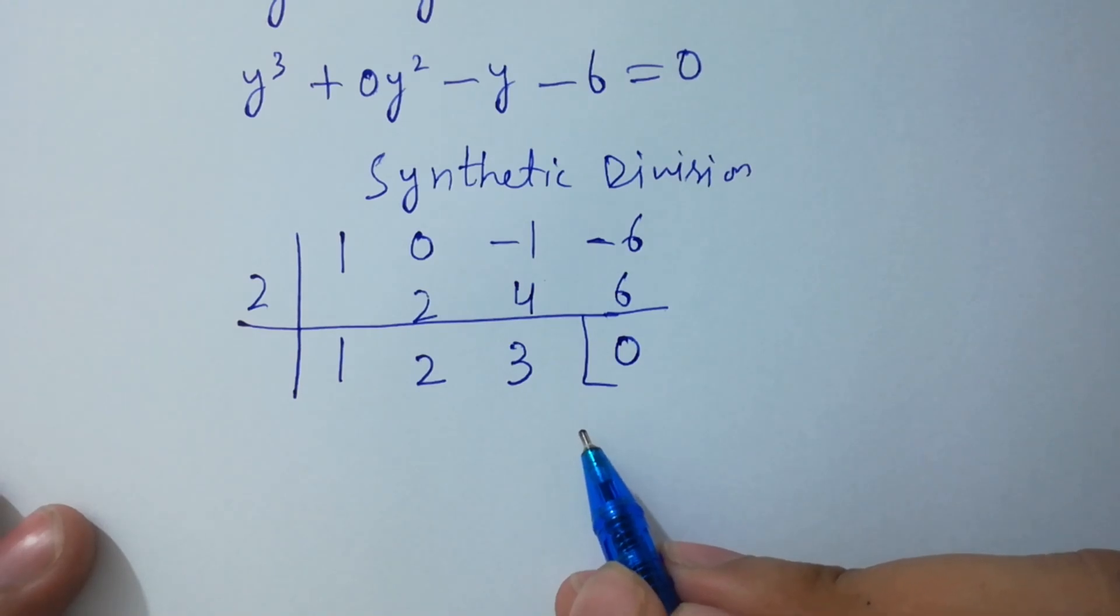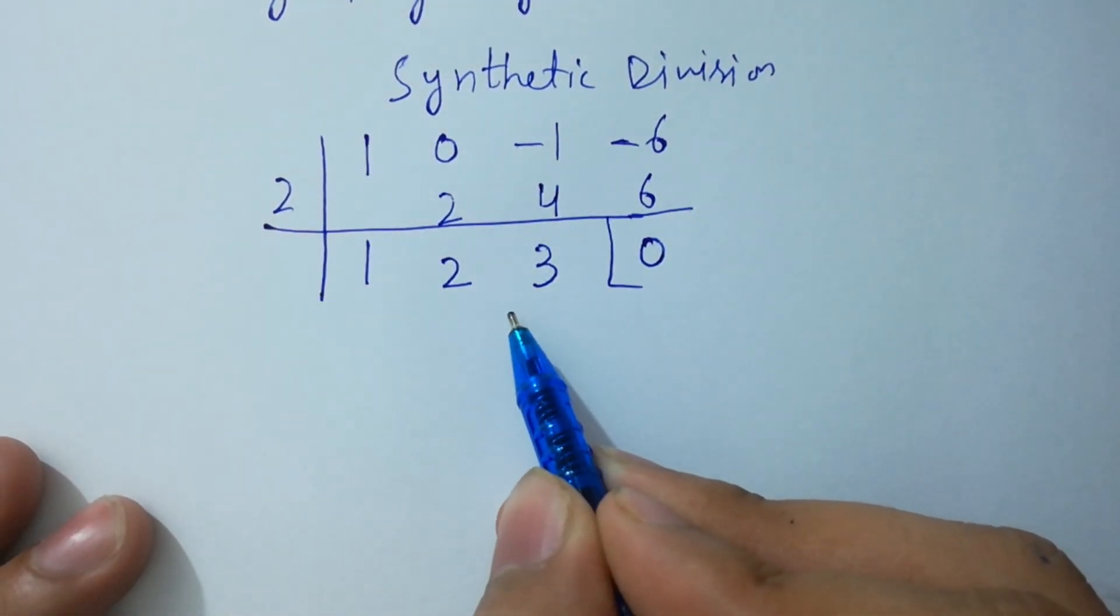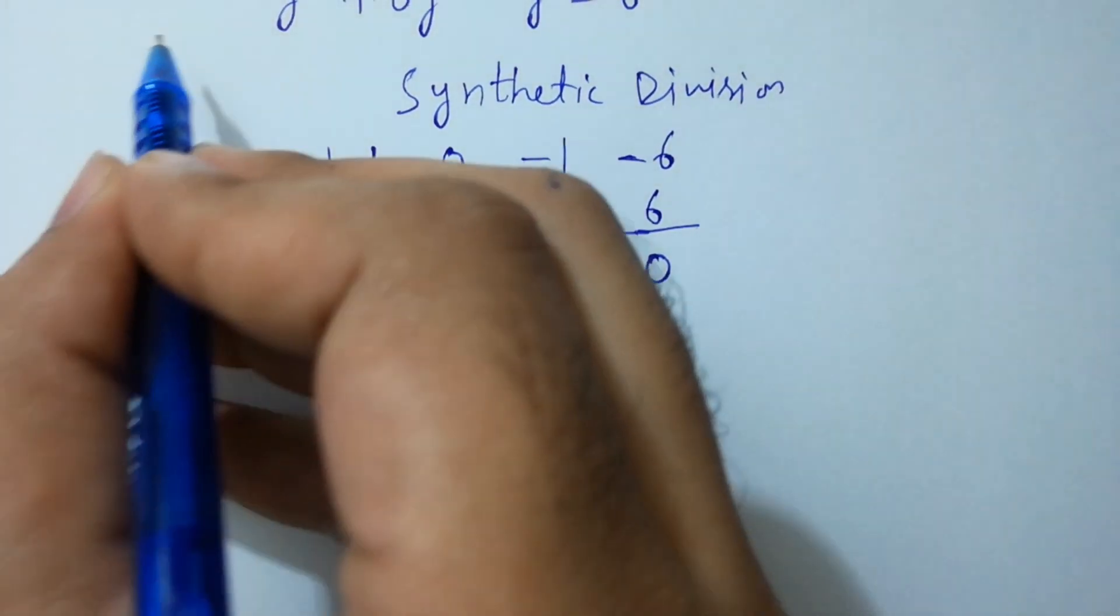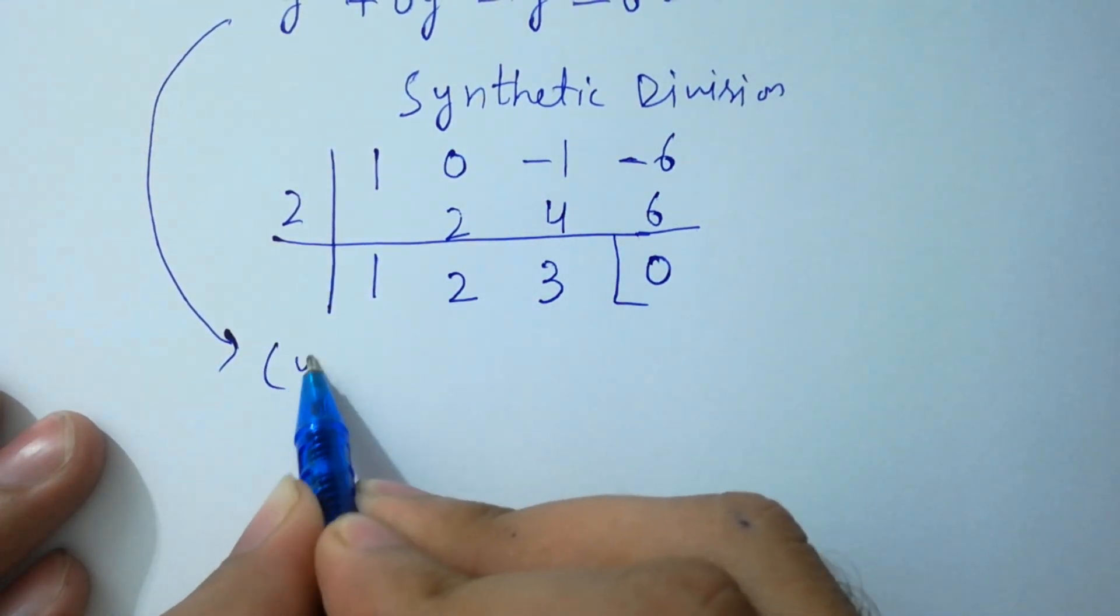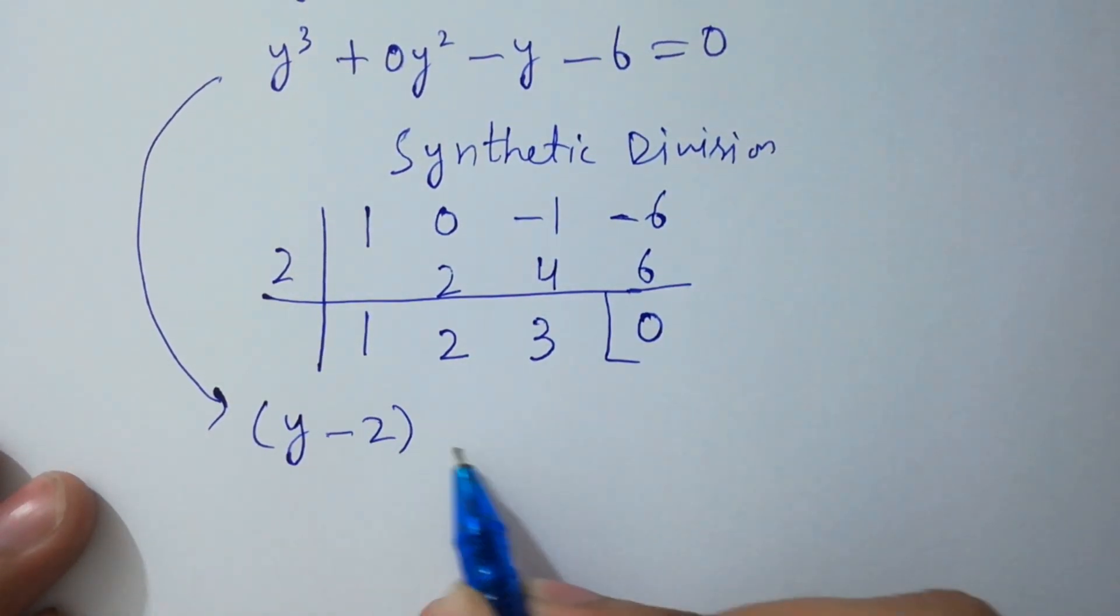Which means y equal to 2 is the solution and y minus 2 is the factor, and these are the coefficients of the polynomial that remains after we factor out y minus 2. So we have y minus 2, y square plus 2y plus 3 equal to 0.